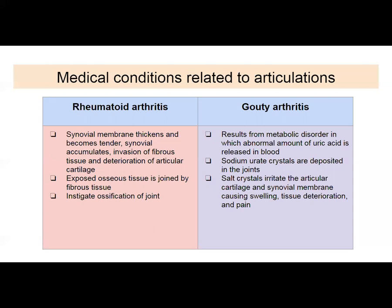Gouty arthritis is caused by a metabolic disorder where an abnormal amount of uric acid is released into the blood. Sodium urate crystals accumulate inside your joints, which are very irritating to the articular cartilage and synovial membrane, causing swelling, tissue deterioration, and extreme pain. Most people who have had it say it's excruciating.